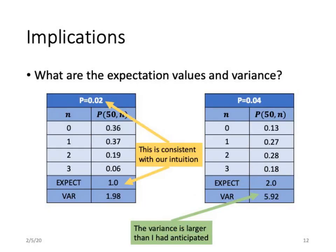Looking at expectation values: at 2% with a population of 50, we expect one death — entirely consistent with intuition, since 2% means two out of a hundred or one out of fifty. At 4%, we expect two deaths per 50 people. What did surprise me is the width of the variance: at a 4% death rate, the variance is around 6 people, so the uncertainty is roughly one death plus or minus six, which is a little alarming.